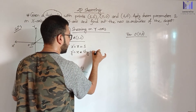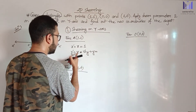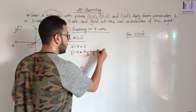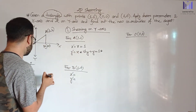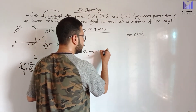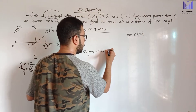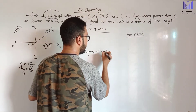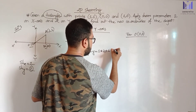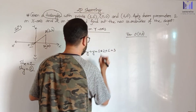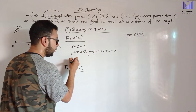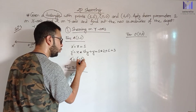For point A(1,1) with shearing on Y-axis: X prime equals X which is 1. Y prime equals Y plus X multiplied by shY. So Y prime equals 1 plus 1 into 2 equals 1 plus 2 equals 3. So A prime equals (1,3).